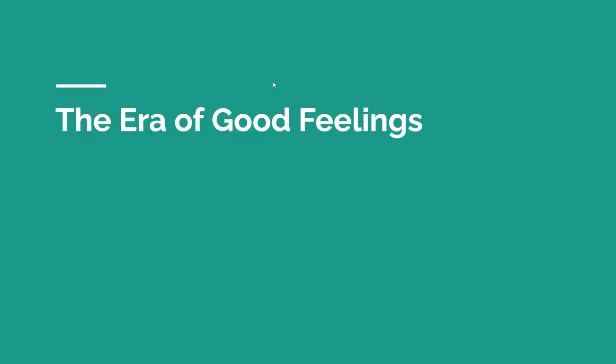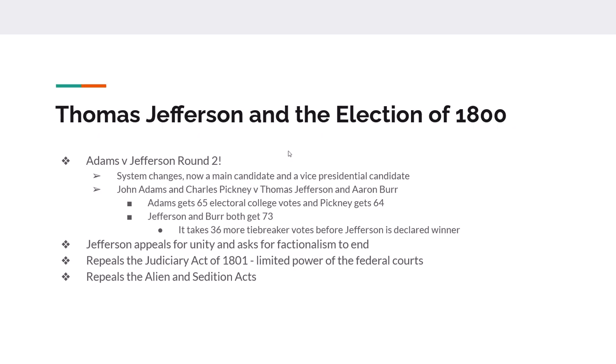From there, you have the Era of Good Feelings — the era of Thomas Jefferson, James Madison, and Monroe. Thomas Jefferson is elected president in 1800, marking the beginning of the end for the Federalists. Once again it's John Adams versus Thomas Jefferson, but this time they decide to have running mates.